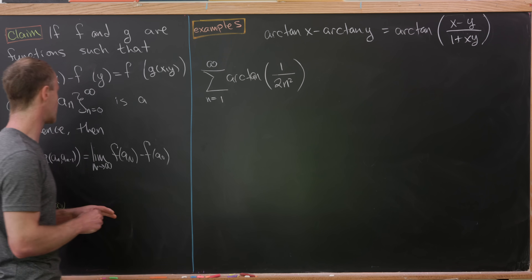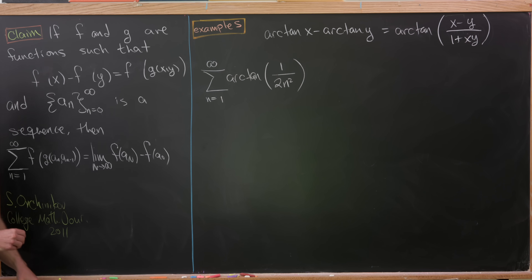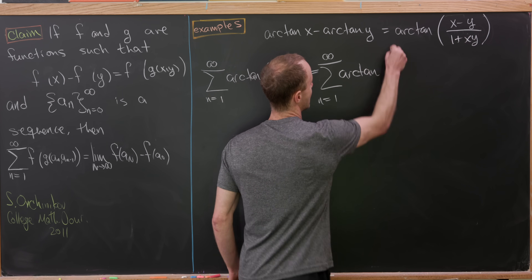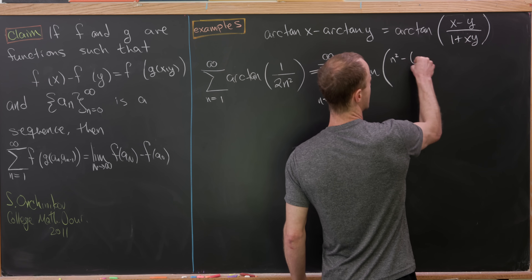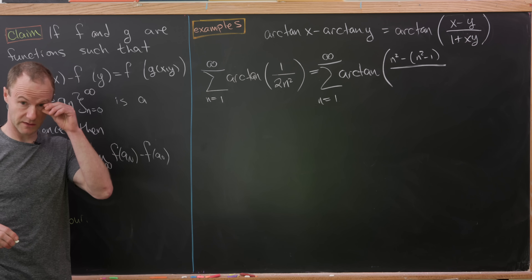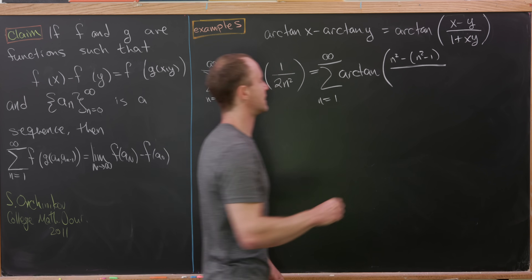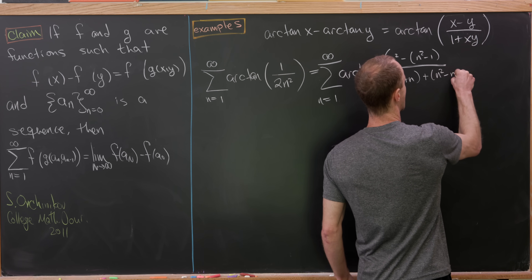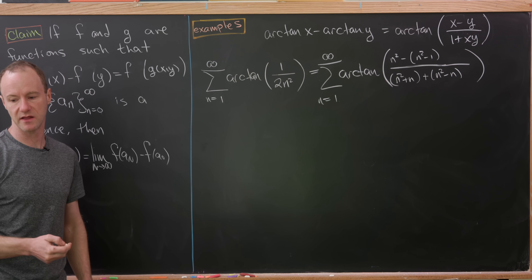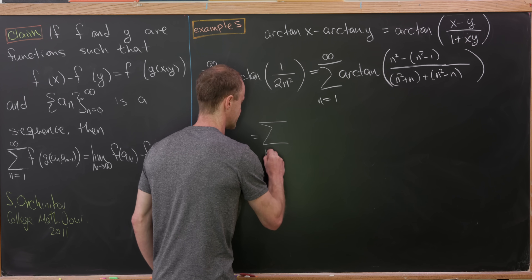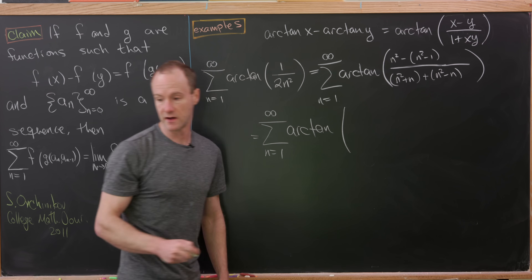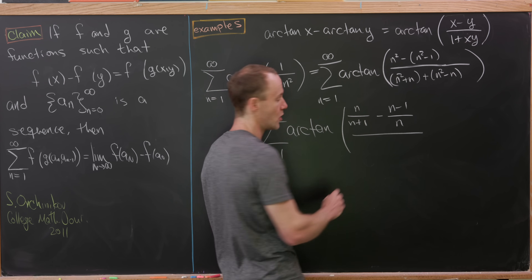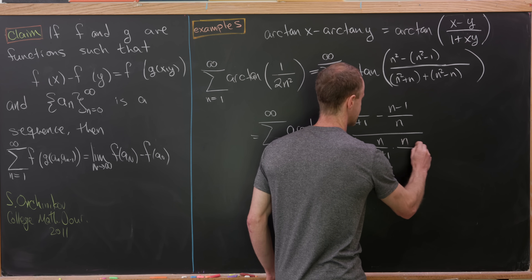The role of x should be played by a sub n, whereas the role of y by a sub n minus 1. We're going to take that argument of arctan and rewrite it as n squared minus the quantity n squared minus 1 in the numerator — that clearly gives us a 1 — and in the denominator we write that as n squared plus n plus n squared minus n, which clearly adds up to 2n squared. So we have the sum of arctan of (n over n+1 minus n-1 over n) all over (1 plus n over n+1 times n-1 over n).